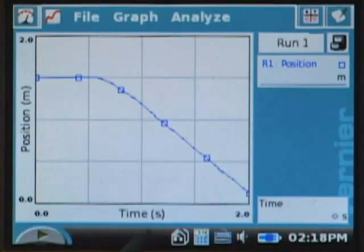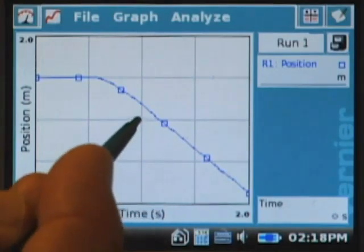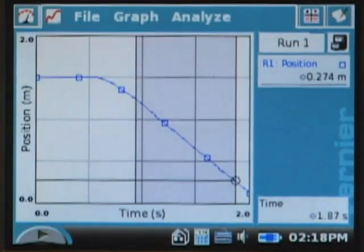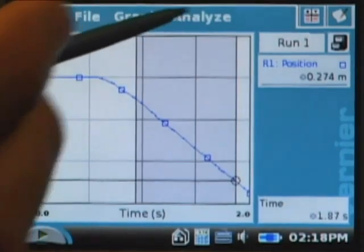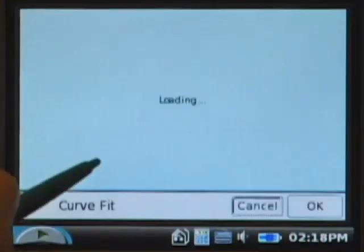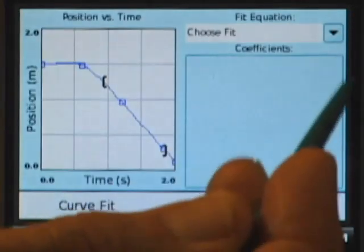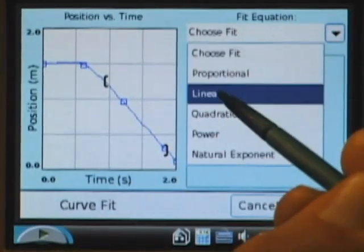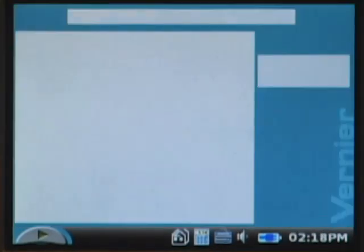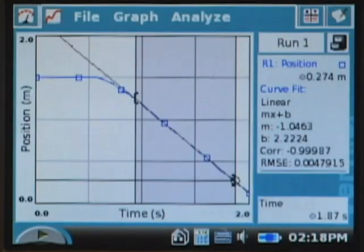I can extract that terminal velocity very easily by selecting a region of my position time graph and doing a linear fit. So I've selected it. I can go to the Analyze menu and ask for a curve fit on the position graph. And I can choose the linear fit, and I see that I've got a slope of about 1.04 meters per second. I can tap OK and get that on the main graph.